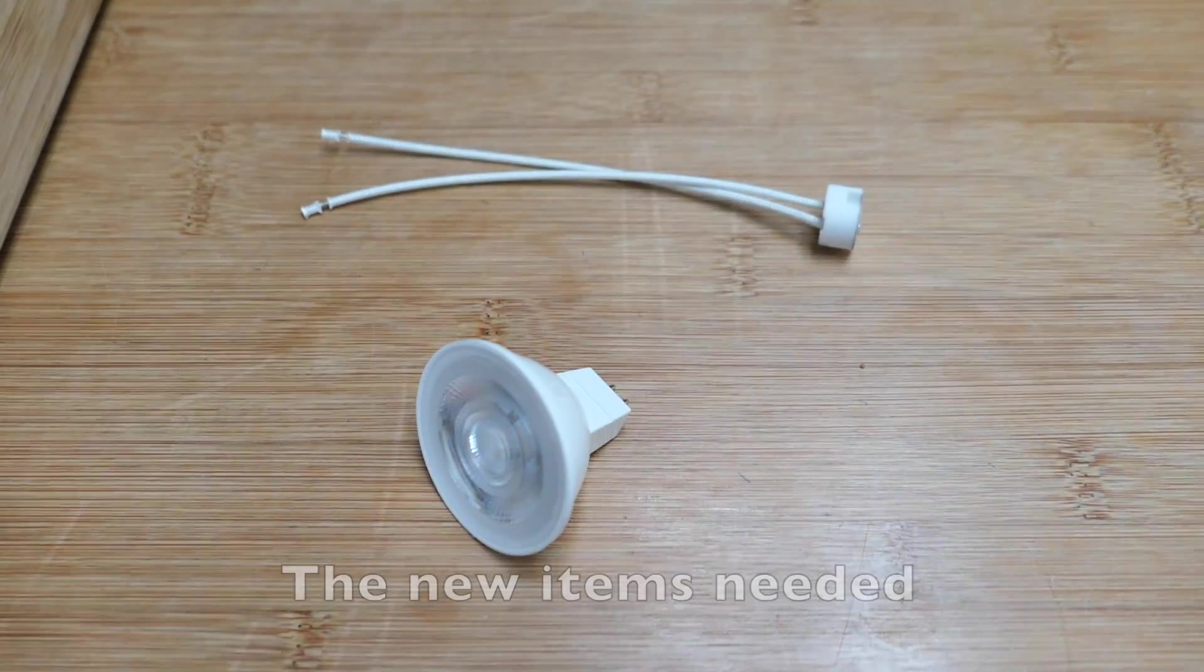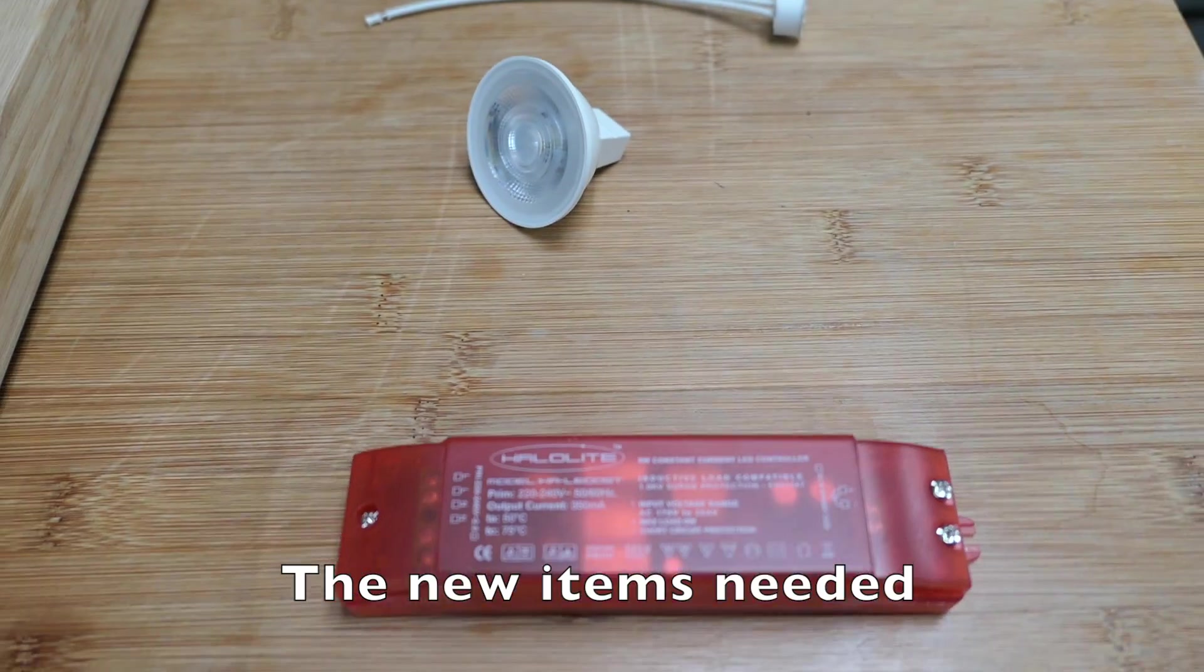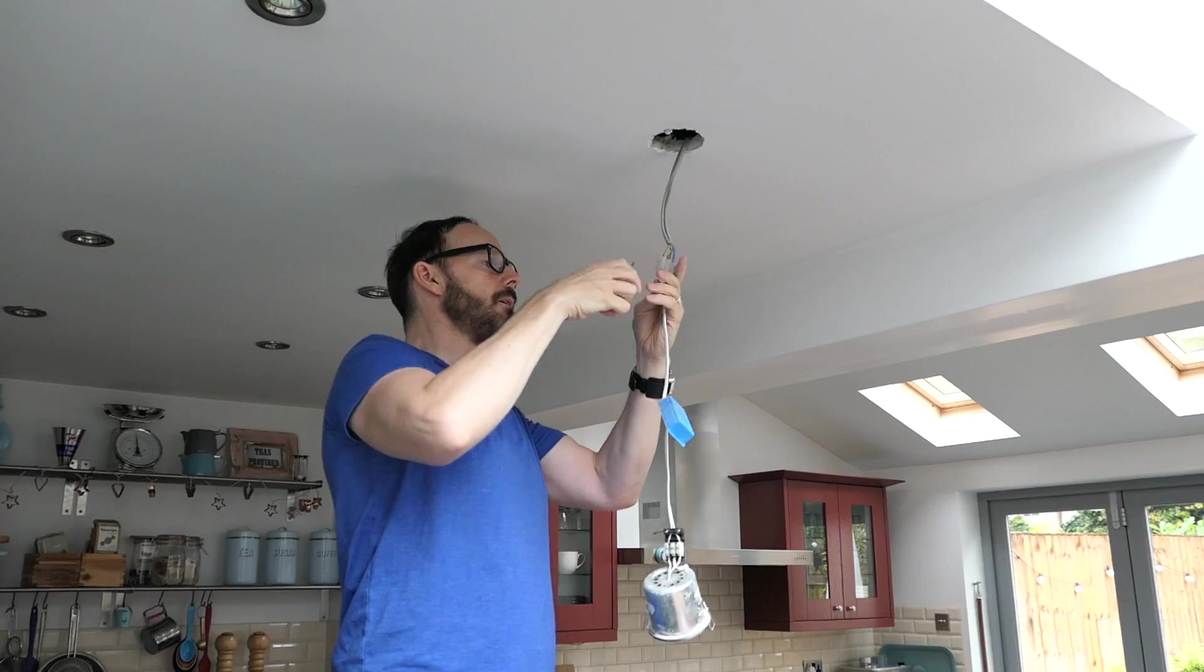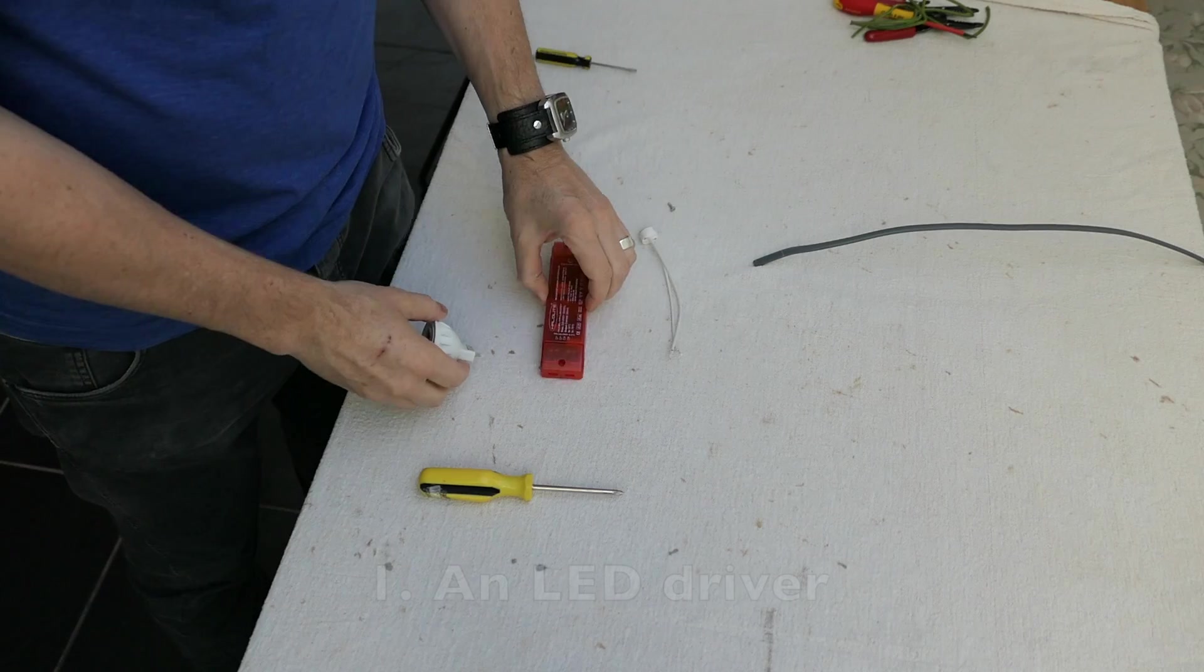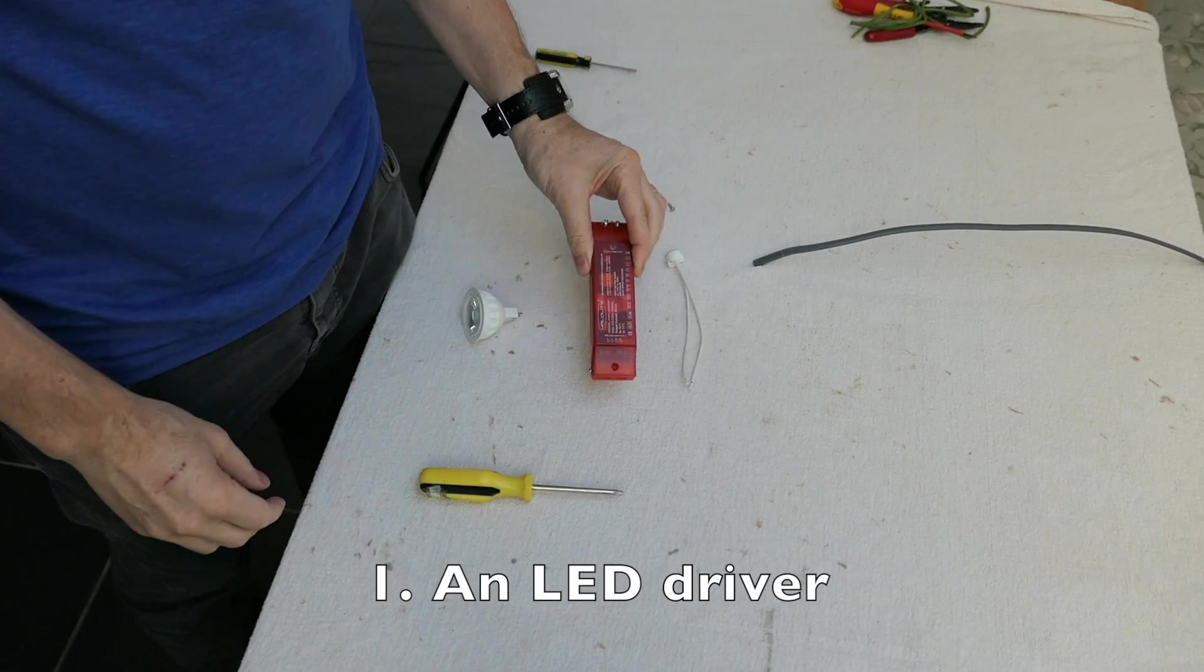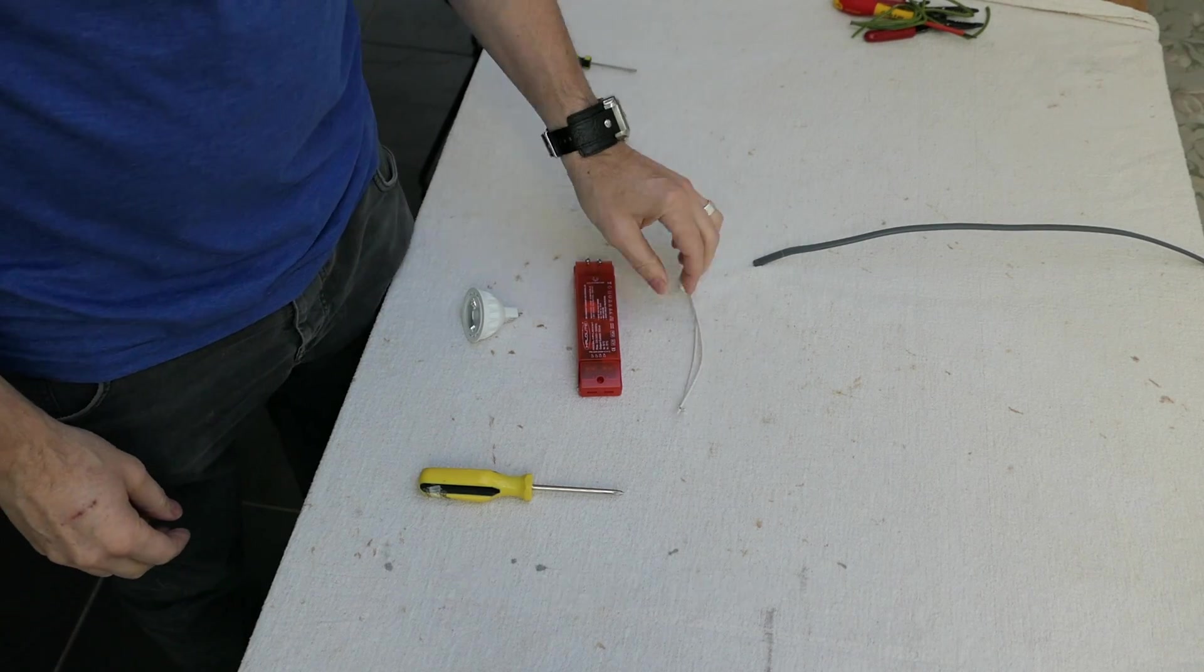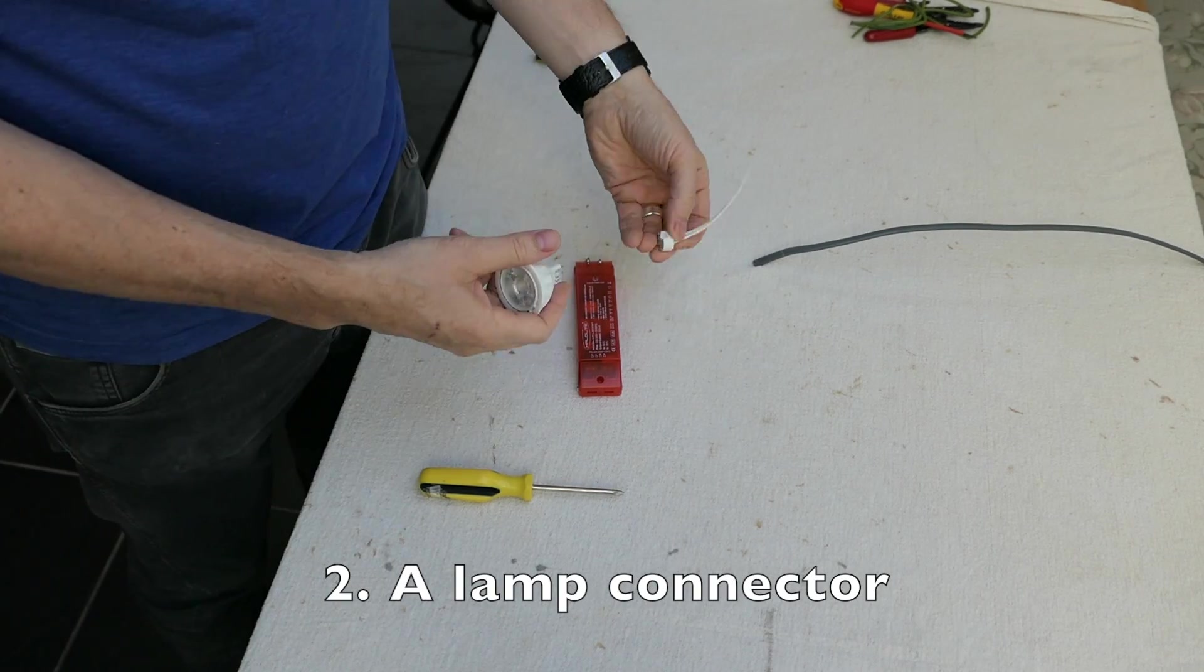These are the new items that you're going to need. Disconnect the unit from the power supply. The new items you are going to need are the LED driver, lamp connector, and the bulb.